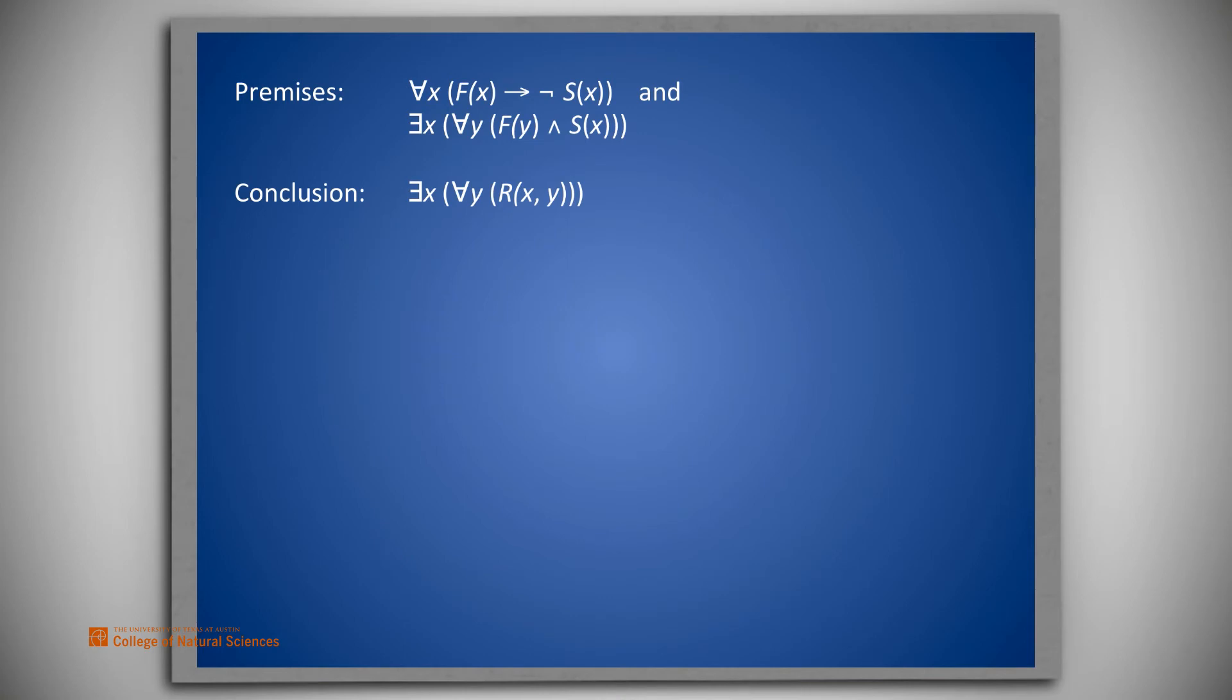But, we ignored the quantifications. The only one that might cause trouble is the existential, there exists an x in premise 2. Let's make sure to deal with that one first, since both of the other quantifications are universal. If you would like to complete this proof on your own, please pause this video now.